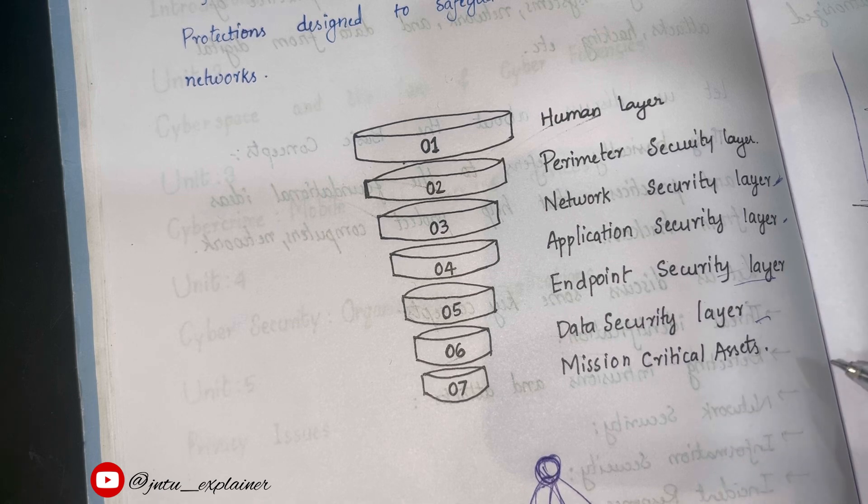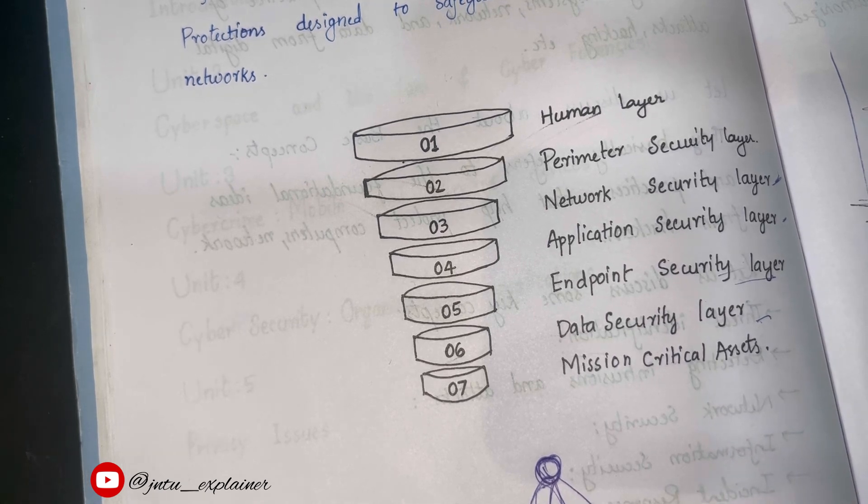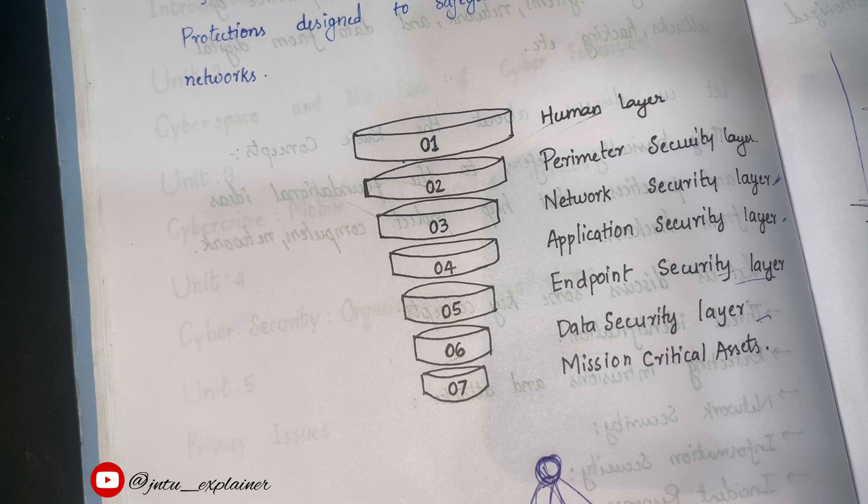And the last one is mission critical assets. These are the layer focuses on safeguarding assets that are crucial to an organization's operation and business continuity. We all know what do we mean by assets. Assets are someone's property or someone who owns them.